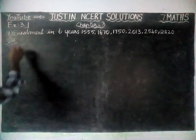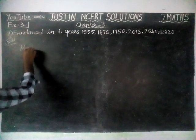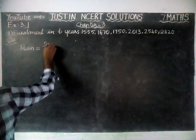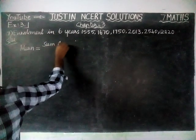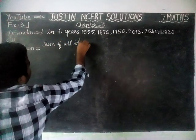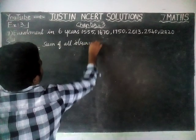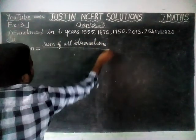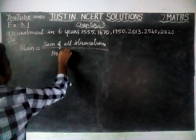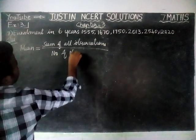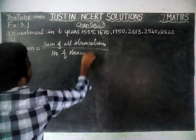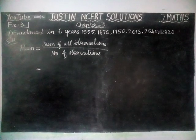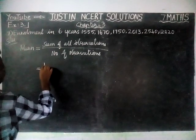Solution: we have to find the Mean Enrollment. The formula to find mean is equal to Sum of all observations divided by Number of Observations. So, we are going to add all the numbers.